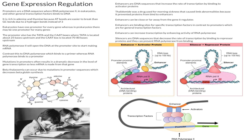Now let's quickly go over silencers. Silencers are essentially the opposite of enhancers. They are DNA sequences that decrease the rate of transcription by binding to a repressor protein, and they can prevent RNA polymerase from binding.